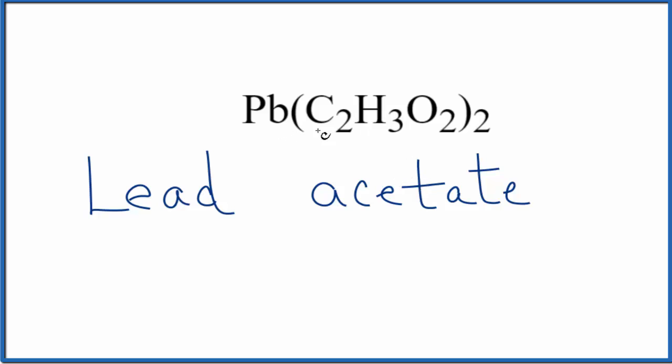Right now the name we have is lead acetate. But because lead is a transition metal, we need to include the charge here. The acetate ion, the whole thing we've memorized or looked it up, is one minus. Two times one minus is two minus. So the lead has to be two plus for those charges to balance out.